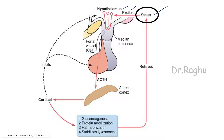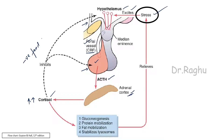Whenever the body is under stress, it excites the hypothalamus, which secretes corticotropin releasing factor. This corticotropin releasing factor travels via portal blood vessels to the anterior pituitary gland and stimulates it to produce ACTH — adrenocorticotropic hormone. ACTH then stimulates the adrenal cortex to produce cortisol. When cortisol levels increase, cortisol itself inhibits both the anterior pituitary and the hypothalamus — this is called the negative feedback mechanism.